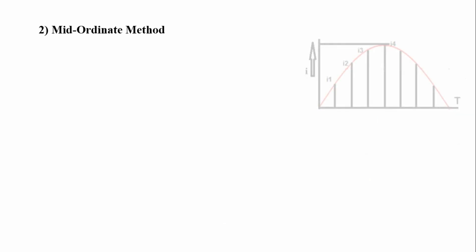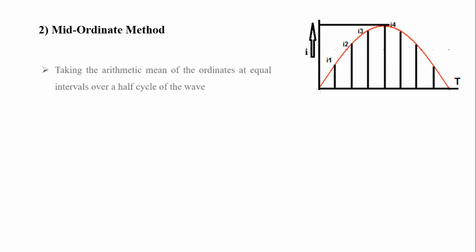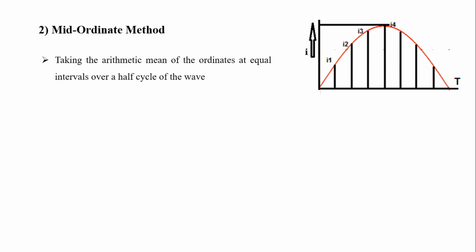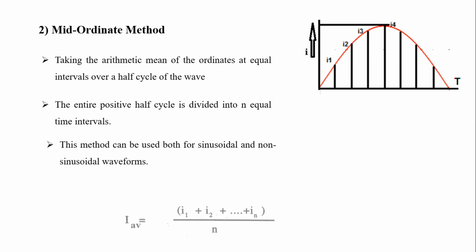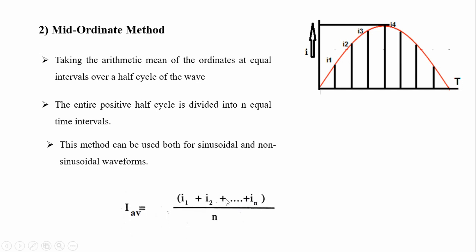In the mid-ordinate method for average value, we take the arithmetic mean of ordinates at equal intervals over a half cycle. The entire positive half cycle is divided into n equal time intervals — for example, seven equal intervals I1, I2, I3, I4, etc. Then I_average = (I1 + I2 + ... + In)/n. This method can be used for both sinusoidal and non-sinusoidal waveforms.